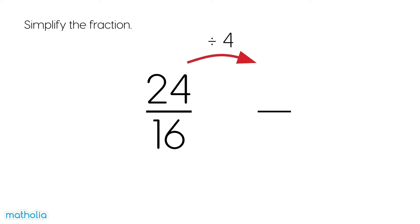24 divide 4 is 6. 16 divide 4 is 4. 24 sixteenths equals 6 quarters.